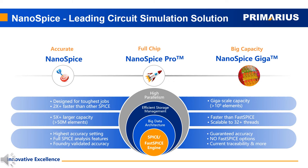Nanospice Pro delivers even faster speed for full-chip memory and SOC design. Nanospice Pro is two to three times faster than Nanospice Giga on average. All these tools are very memory efficient and scalable, and are also foundry proven and ready to run on most of the models on the market.